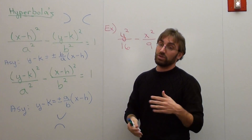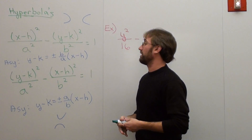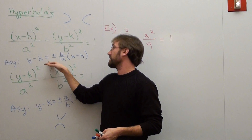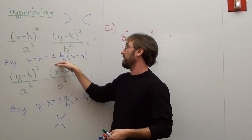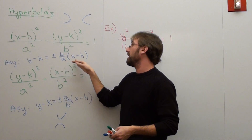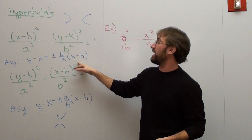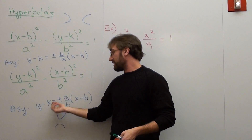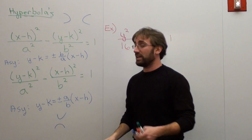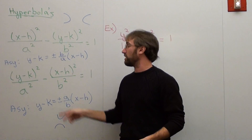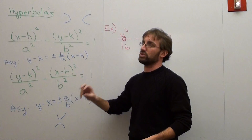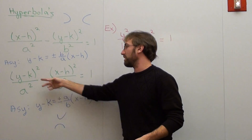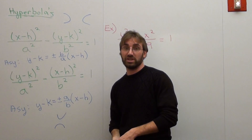There are asymptotes to worry about here. For the first form, the asymptote is y minus k equals plus or minus b over a times the quantity x minus h. The second one is almost identical except you reverse the b and the a — so this one is b over a, and this one is a over b if the y goes first.